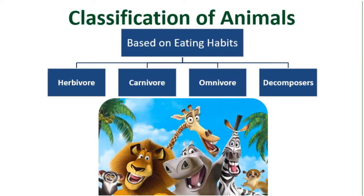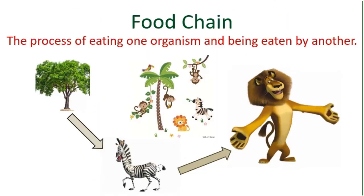We have learned that animals are classified into four groups based on their eating habits. These are herbivores, carnivores, omnivores, and decomposers. The process of eating one organism and being eaten by another is known as a food chain.